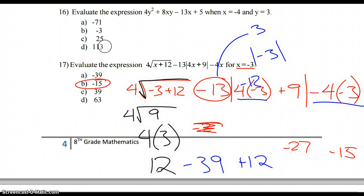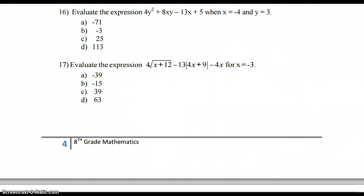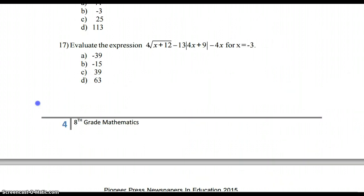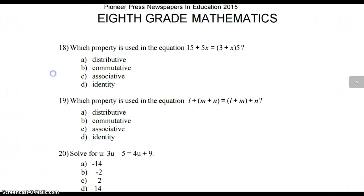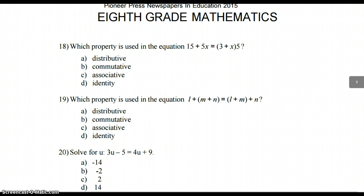Number 18, which property is used in this equation? 15 plus 5x equals 3 plus x all times 5. That's like a backwards distributive property. Because if you were to distribute this 5, you would get this. So there we go. That's distributive.